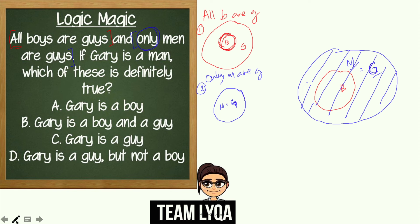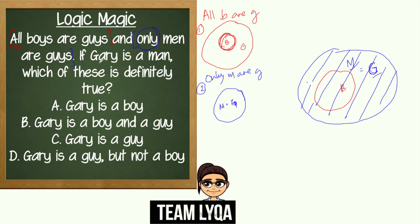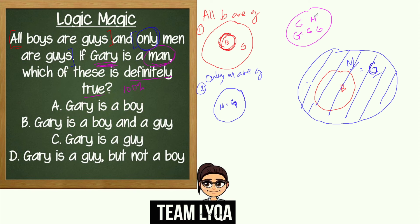Now, if Gary is a man, which of these is definitely true? When it says 'definitely true' in logic, it means 100% true — beyond the shadow of a doubt. What we know is that Gary is a man, so he is inside the circle labeled M. We don't know exactly where inside that circle, but he's definitely within the M circle.